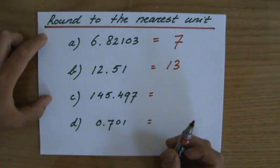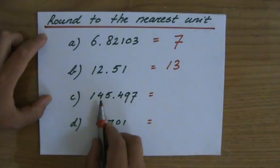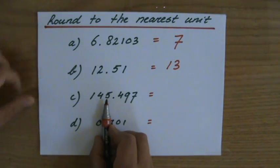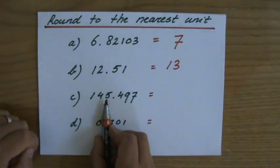145 point four nine seven to the nearest units. So that's my unit, five stays a five or goes up to a six, that depends on the next one.